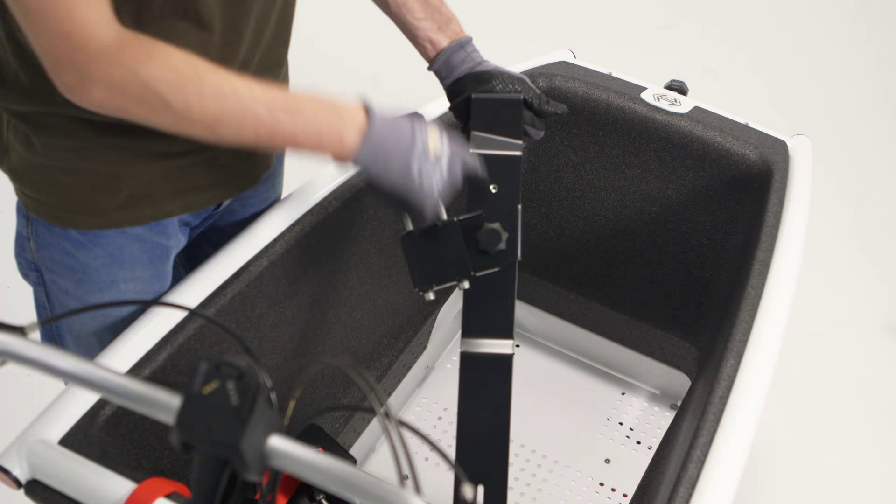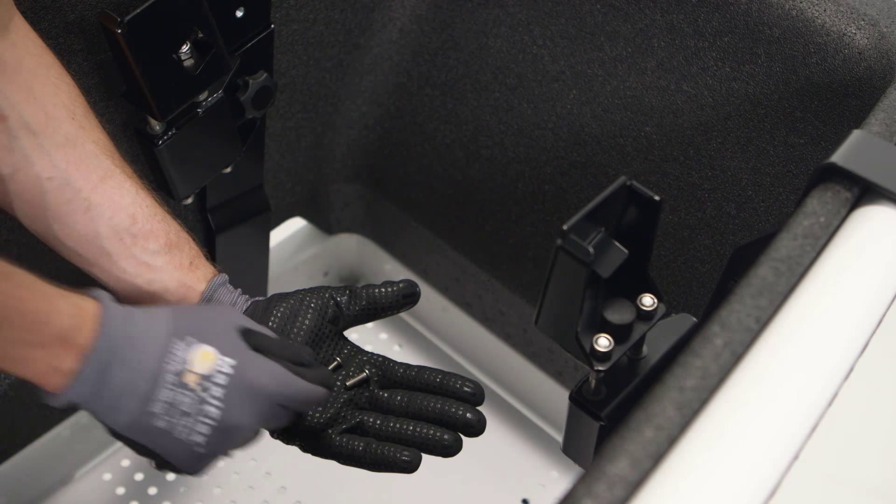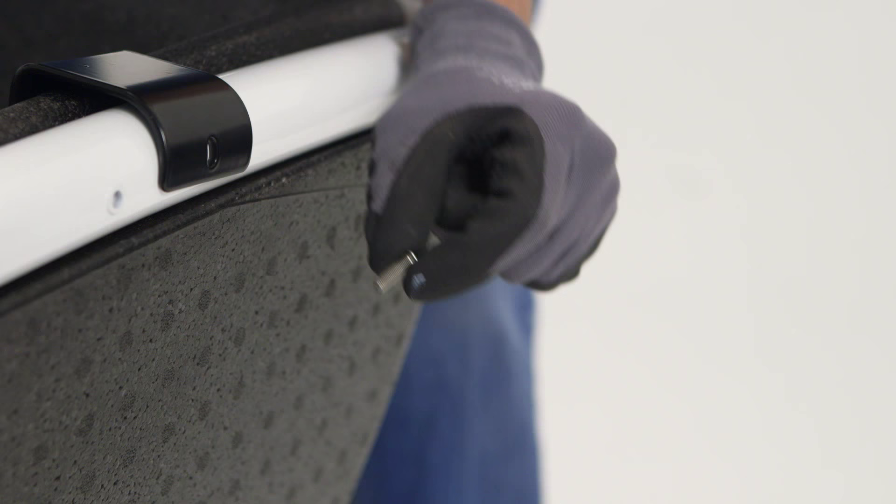Please note that the left and right brackets are mounted in the exact position seen here. Once the brackets are in position, use the smaller bolt to fasten each bracket to the bottom of the box.